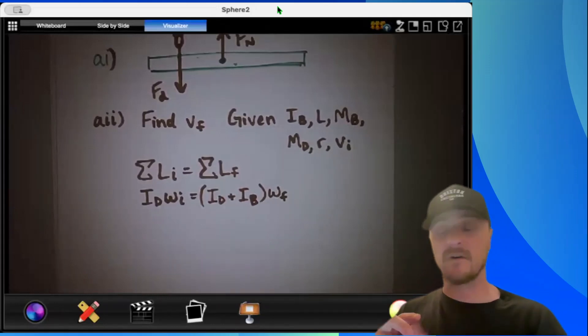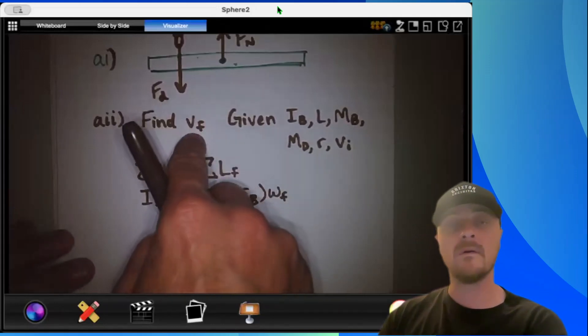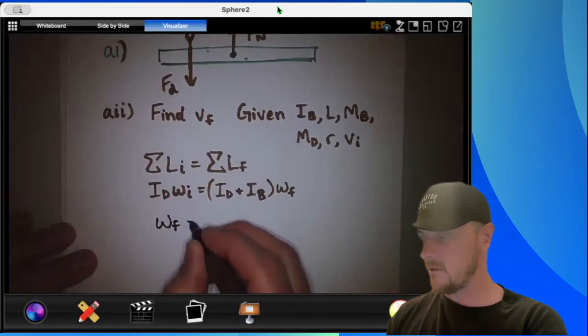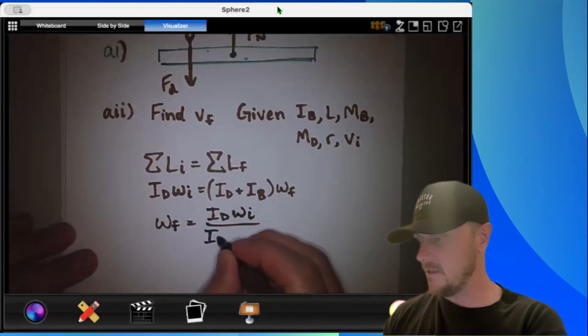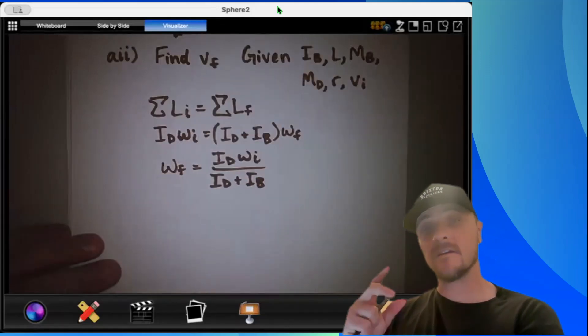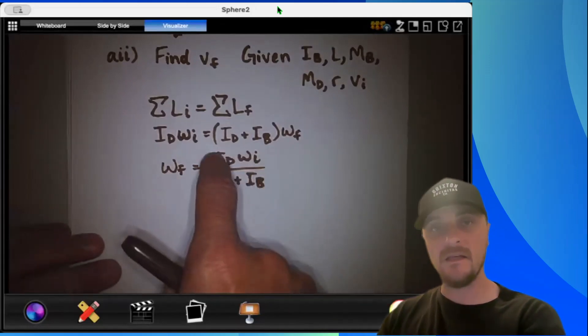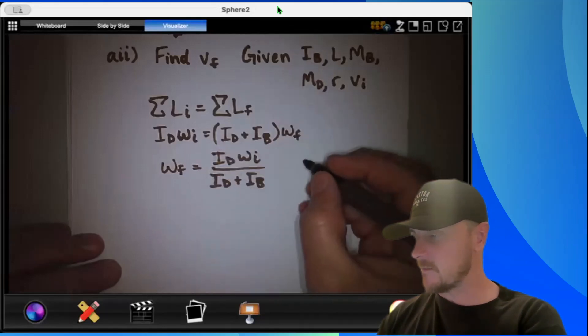I'm going to solve for omega f because I know it's directly related to vf. So I'm going to write omega f equals id omega i divided by id plus ib. And at this point, I think it's a good idea to start putting in specific information for omega f, omega i, and id. Notice we can leave ib in our answer.